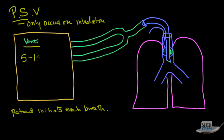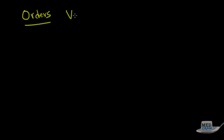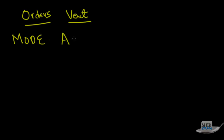Pressure support can be set anywhere from 5 to 15. Now we're going to go into these modes a little more carefully and dissect them for your benefit. There are four things you should know about writing ventilator orders.